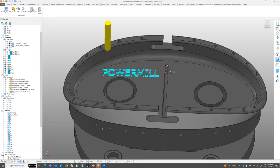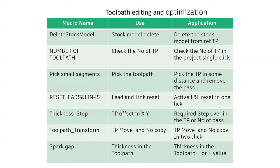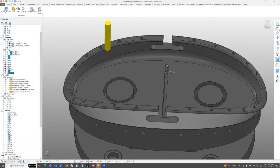Moving to the fourth category: Toolpath Editing and Optimization. PowerMill has standard editing capabilities, but beyond that we have additional macros for lead handling changes, XY offsetting, adding different thickness values (plus or minus), and offsetting the toolpath in the Z direction.